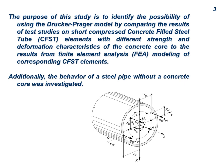The purpose of this study is to identify the possibility of using the Drucker-Prager model by comparing the results of test studies on short compressed concrete-filled steel tube (CFST) elements with different strength and deformation characteristics of the concrete core to the results from finite element analysis (FEA) modeling of corresponding CFST elements. Additionally, the behavior of a steel pipe without a concrete core was investigated.